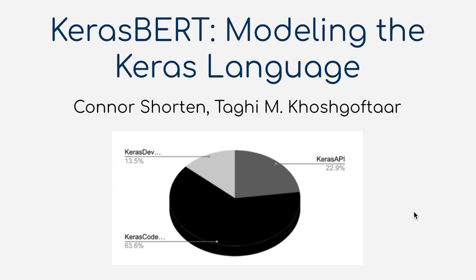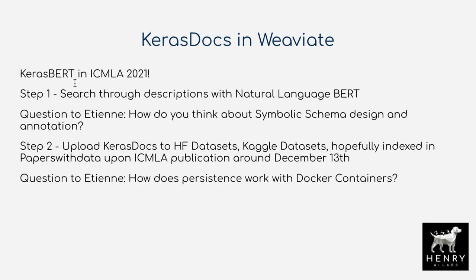Keras BERT — the high-level overview is it's a language model trained on Keras information, and particularly this project was inspired by the Keras code examples as the dataset source. I'm really excited about developing this, and I'm excited to tell you about how I'm adding this dataset into Weaviate and the lessons I'm learning by adding vector search functionality for my own custom dataset. This is inspired by things like the OpenAI Copilot — the idea of language models on code data — but fine-tuned into deep learning-specific and Keras-specific code, as well as PyTorch and Jax. I'll be presenting the full Keras BERT paper when it's published in ICMLA 2021, which will include open-sourcing the model checkpoints.